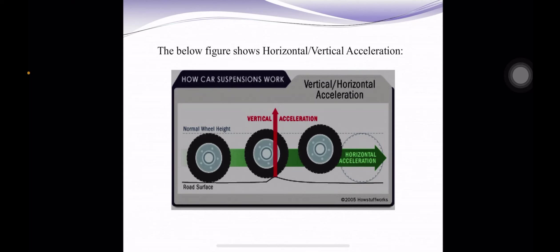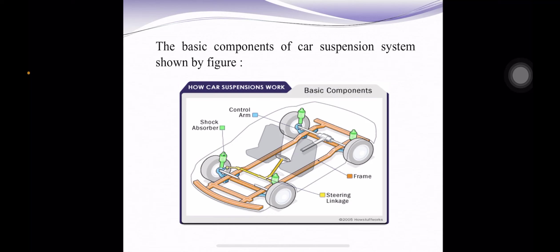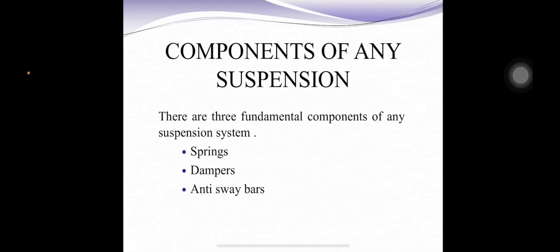This figure shows the horizontal and vertical acceleration. The suspension of a car is actually part of the chassis, which comprises all of the important systems located beneath the car's body. This system includes the frame, suspension system, steering system, and tires and wheels. The basic components of the car's suspension system are shown in this figure, which includes the frame, steering linkage, control arm, and shock absorber.